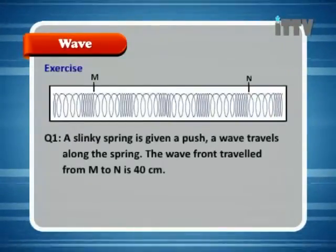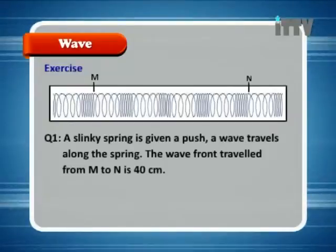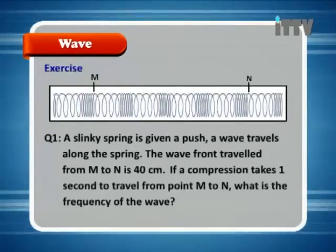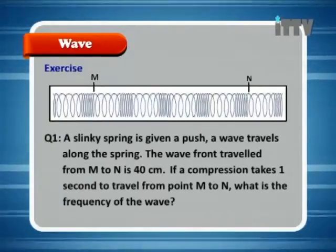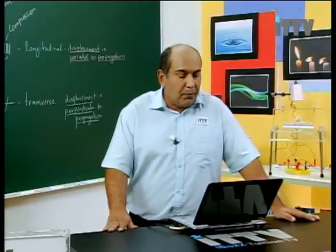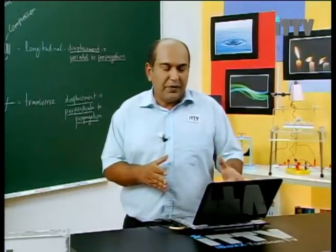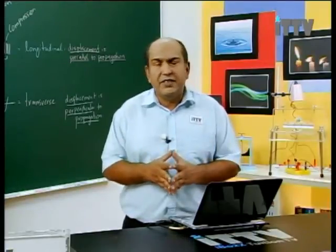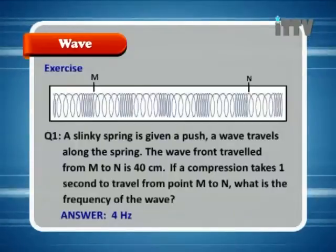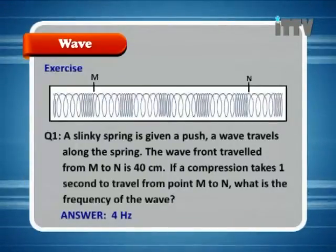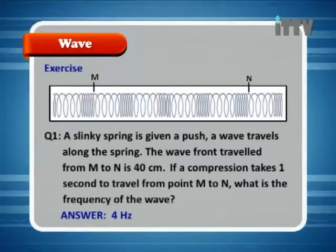Exercise: A slinky spring is given a push and a wave travels along the spring. The wave front traveled from M to N is 40 centimeters. If a compression takes one second to travel from point M to N, what is the frequency of the wave? The compression takes one second to travel the length of four waves, so that's four waves per second. Therefore, frequency equals four hertz. Remember, frequency is the number of waves per second.